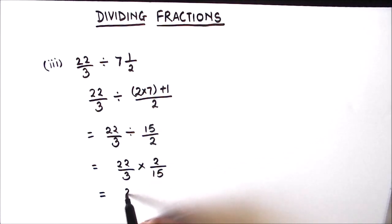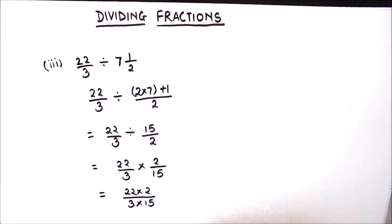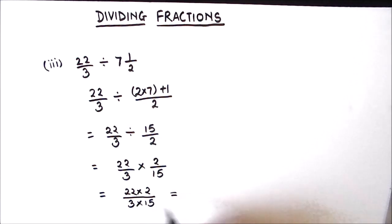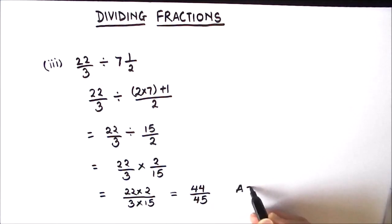So we have 22 times 2 in the numerator and 3 times 15 in the denominator. There are no common factors between numerator and denominator, so 22 times 2 is 44 and 15 times 3 is 45. Our final answer is 44 upon 45.